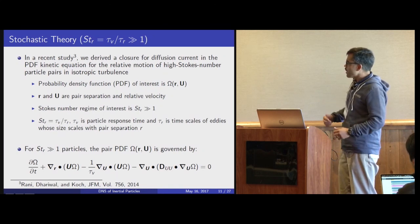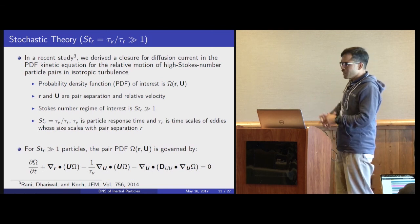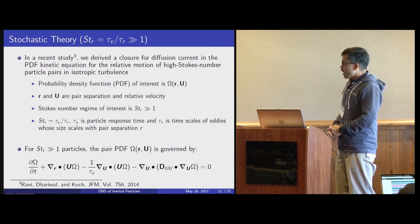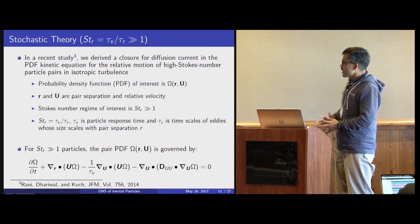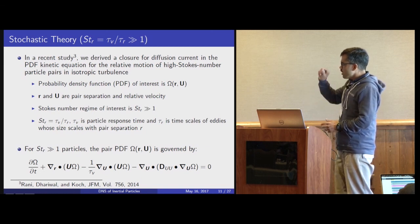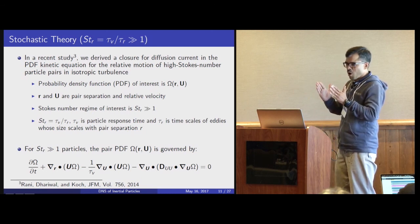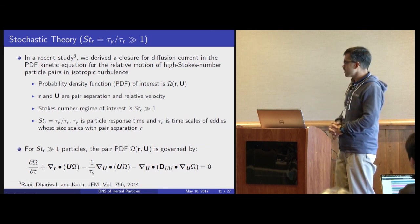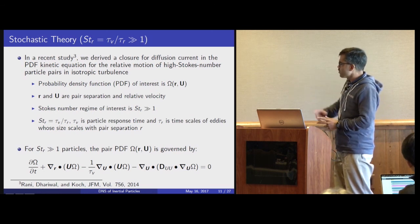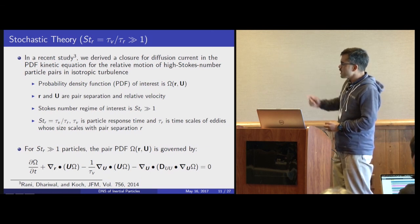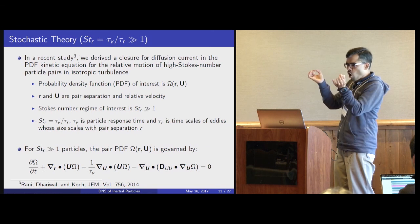This is primarily a theoretical study in which we derived a stochastic theory. The primary quantity of interest is the probability density function Omega — the PDF of pair separations R and relative velocity U. This theory specifically focuses on very high Stokes number particles, i.e., very inertial particles. The motivation is planetesimal formation where the particle inertia is quite large. The Stokes number regime of interest is ST_R much greater than 1, where ST_R is a ratio of viscous relaxation time to a time scale tau_R — the time scale of eddies whose size is of the order of the pair separation.